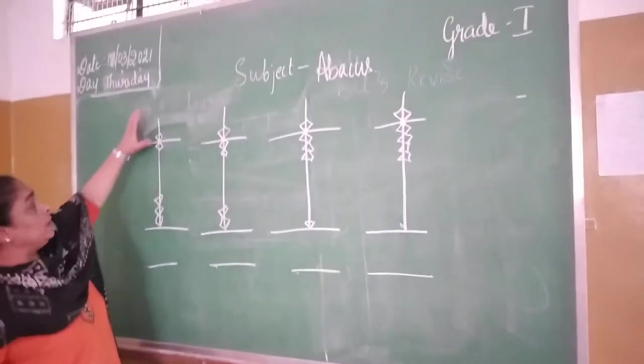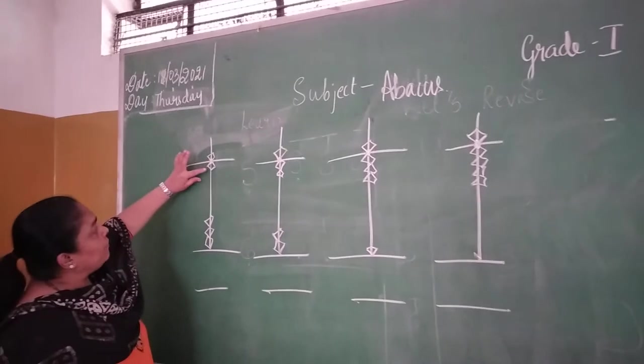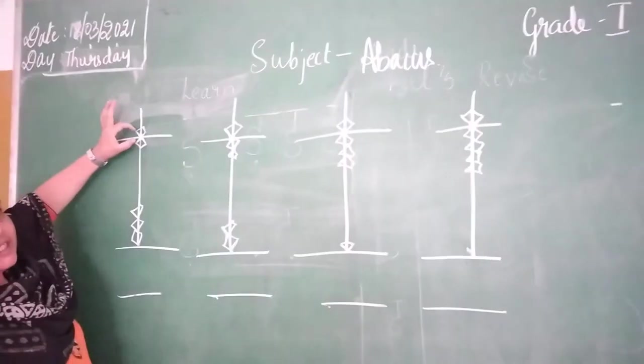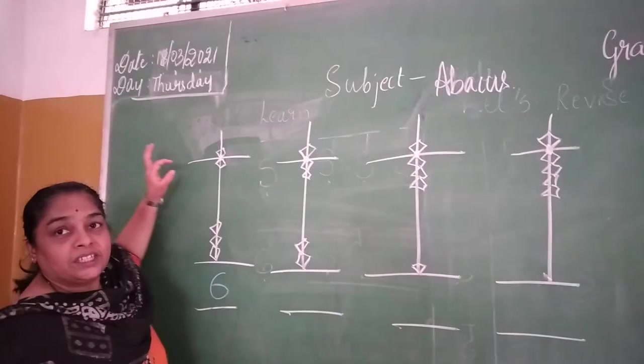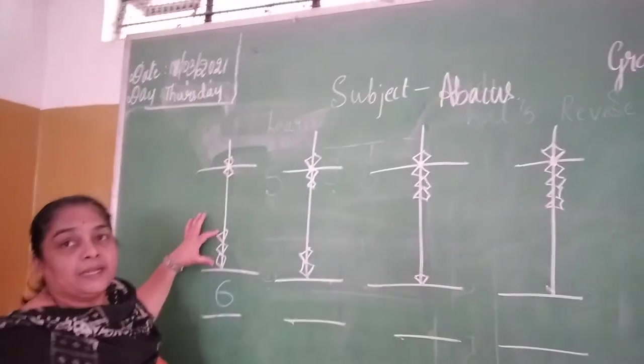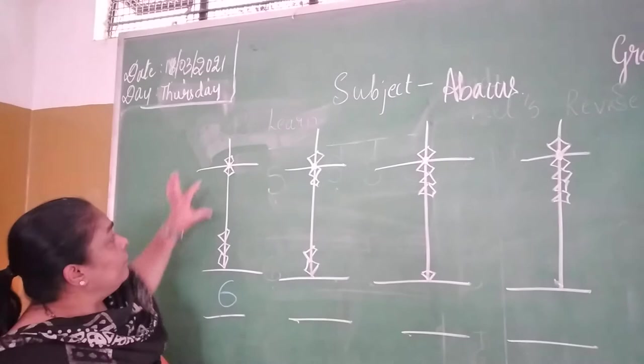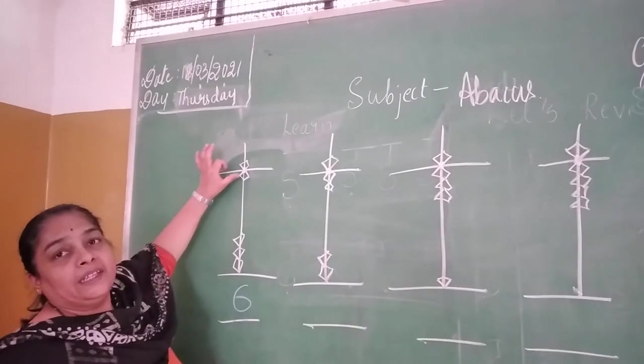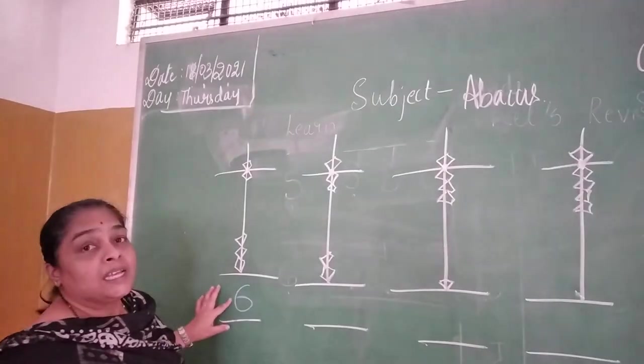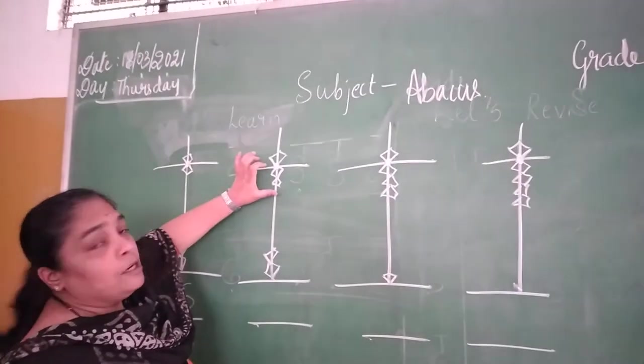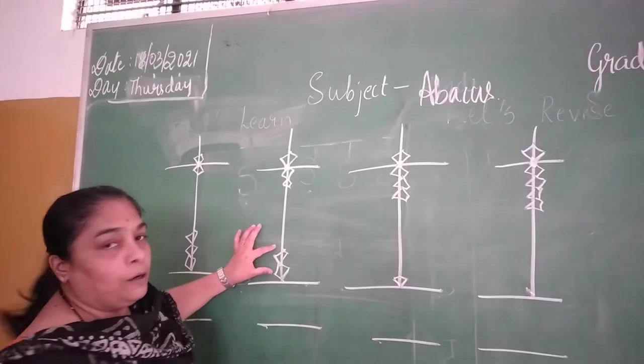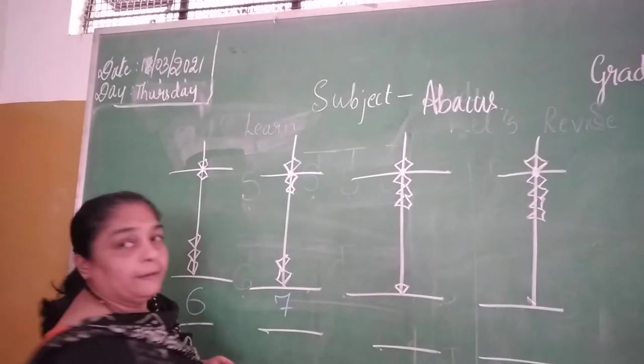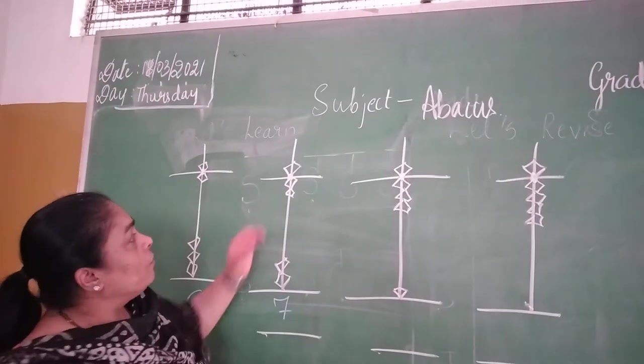When one upper bead and one lower bead is touching the divider, see? This is six. Right children? When three beads are touching the divider - one upper and one lower - we call it as six. Next, upper one, lower two. Here, it will be two beads. It is seven. Okay children? See?